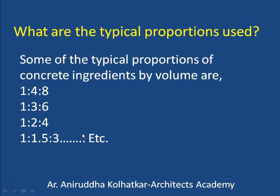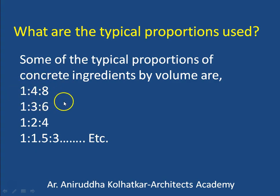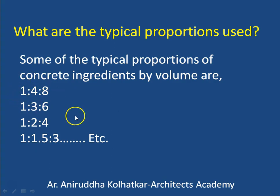How is this proportion mentioned on site? Some typical proportions are 1:4:8, 1:3:6, 1:2:4, 1:1.5:3, and so on. That means these ingredients are added in a certain ratio. So now let us see what these numbers actually mean.